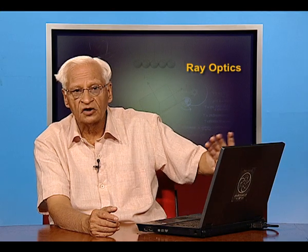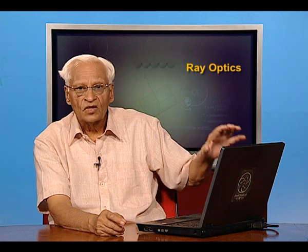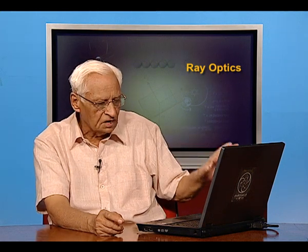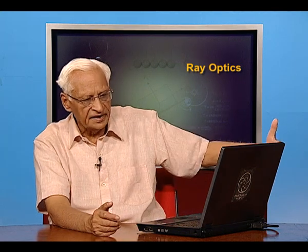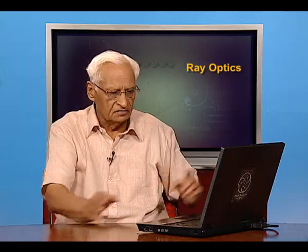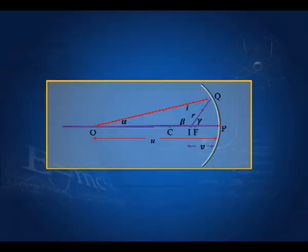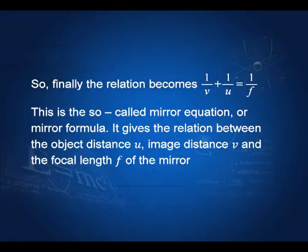So far we have not worried about the sign convention. Now, to get the final formula, we shall make use of the sign convention. Light is coming from the left, so all distances measured to the right are negative. Therefore v is negative, u is negative, r is negative, and f is also negative. Since the negative sign applies equally to all terms, it has no net effect and we get finally the mirror formula: 1/v + 1/u = 1/f.